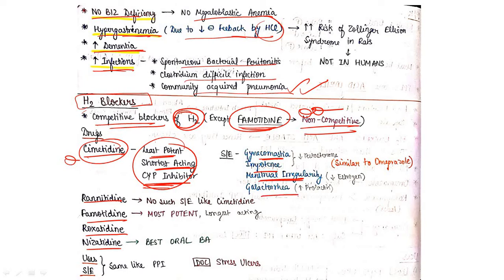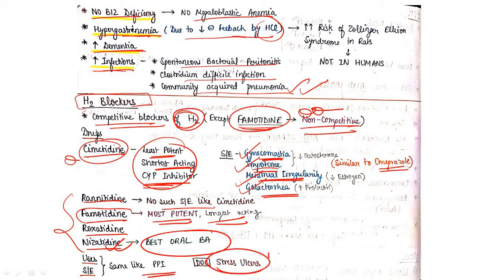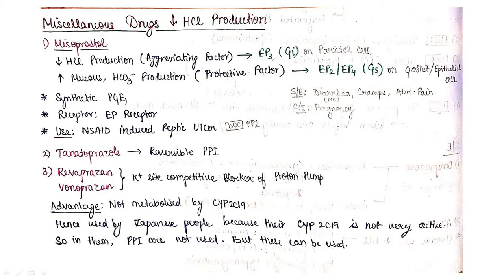These side effects are absent in other H2 blockers. You have seen similar to omeprazole - gynecomastia, impotency. Cimetidine side effects are gynecomastia, impotency, menstrual irregularity and galactorrhea. In ranitidine, no such side effects are seen. Famotidine is most potent and longest-acting drug, and best oral bioavailability is with nizatidine. Uses and side effects are same like PPI. H2 blockers will be the drug of choice for stress ulcer. Remember this: H2 blockers are drug of choice for stress ulcers.